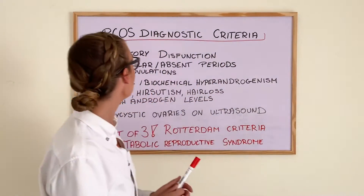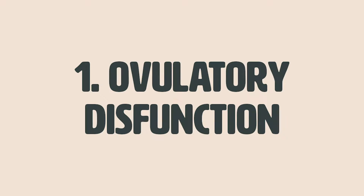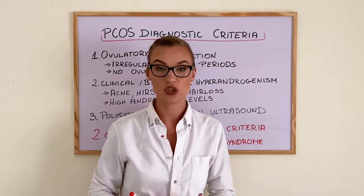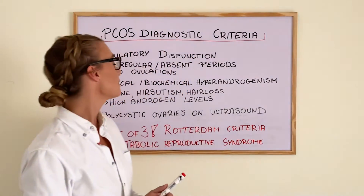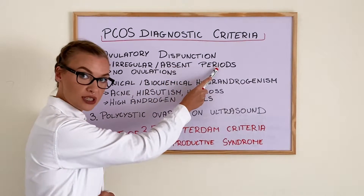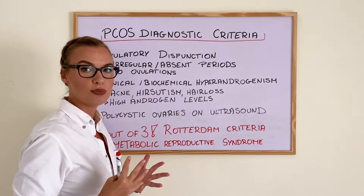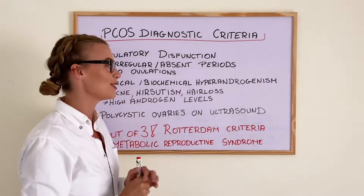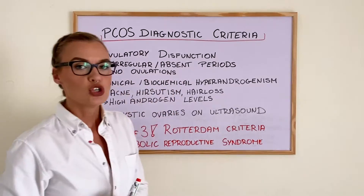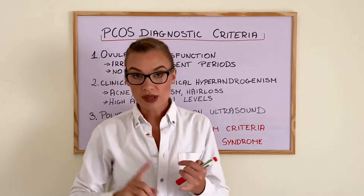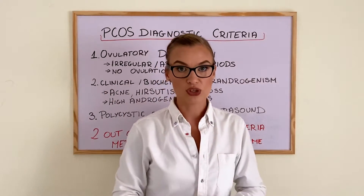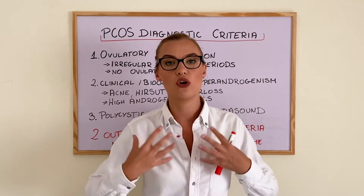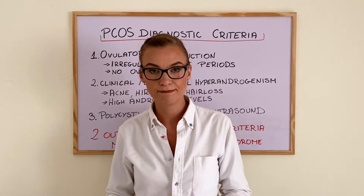The first criteria is ovulatory dysfunction. There are a few things that might be happening in your body to indicate this problem. It's usually irregular or absent periods. Of course, irregular and absent periods can happen for many different reasons, so this is just one of the criteria. No ovulation — you can have ovulation sometimes, irregular periods, or no periods whatsoever — will indicate you have some sort of ovulatory dysfunction.